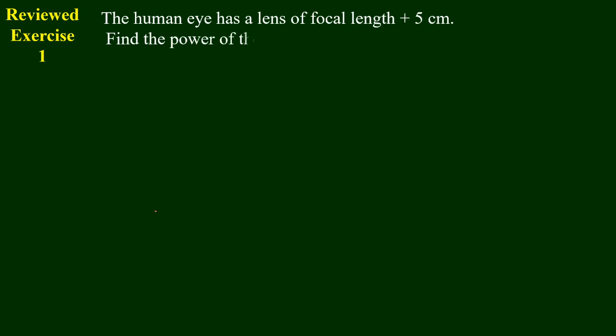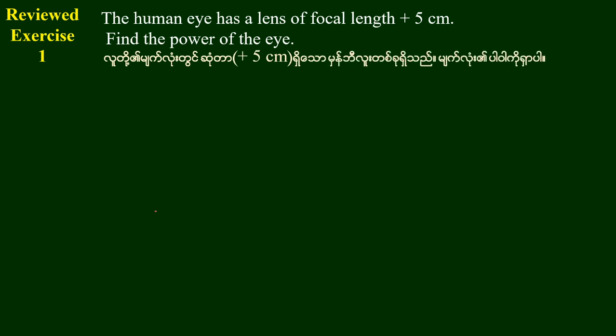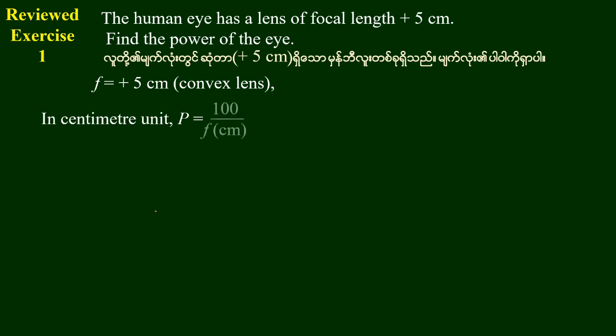The human eye has a lens of focal length plus 5 cm. We need to find the power of the eye lens. Review exercise number one appears to be a good one.